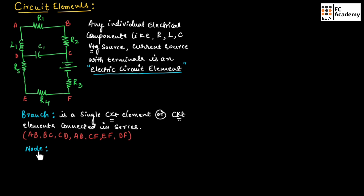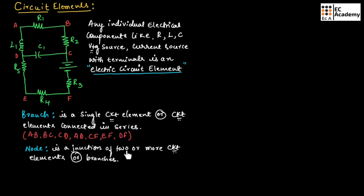Now let us understand node. A node is a junction of two or more circuit elements or branches. As you can see, we can consider A as a node because it is a junction of two circuit elements. In the same way, B, C, F, E, and D are also nodes. So from the circuit, A, B, C, D, E, and F are the nodes of the circuit.